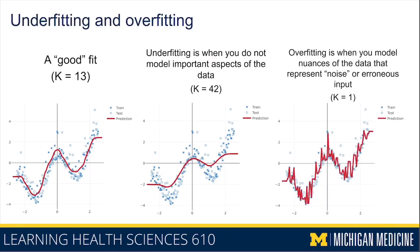In contrast to that, overfitting is when you model every nook and cranny and nuance of the data, even if that nook and cranny represents noise or erroneous input. This case is highlighted by setting k to 1, where each prediction is made by looking only at the single closest neighbor. You can see that this learns a very jagged and flexible relationship that wavers back and forth. It's very unlikely that the predictions shown here represent the true relationship in the world. By modeling all that noise and trying to contort itself to capture every noisy value on this curve, that model is overfit, which means it's probably not going to generalize well to a new data point.